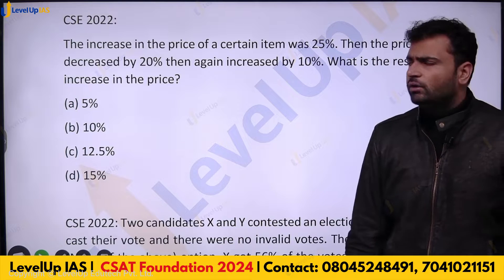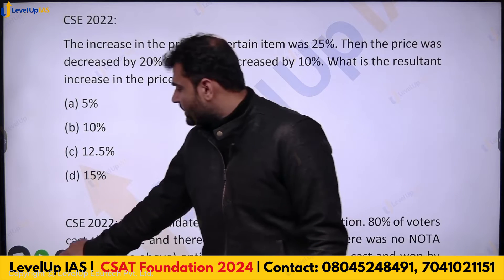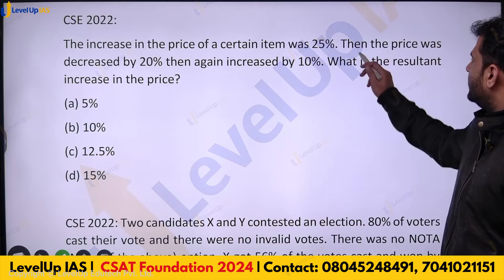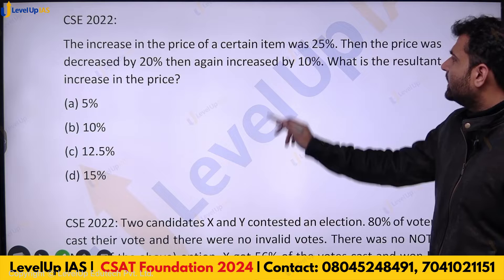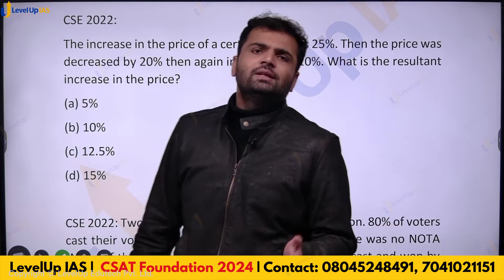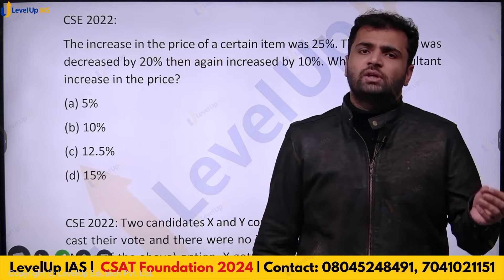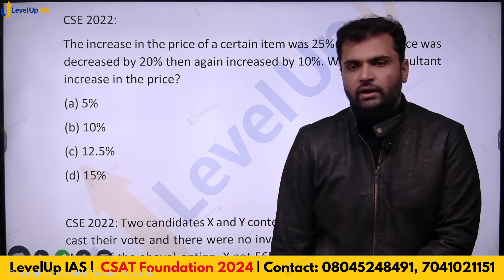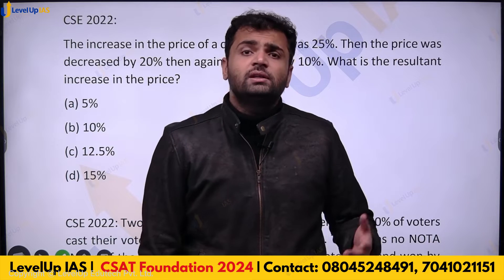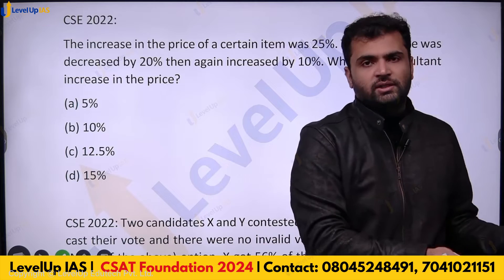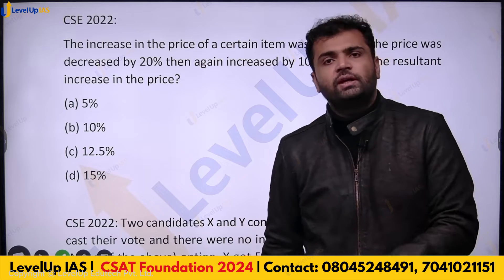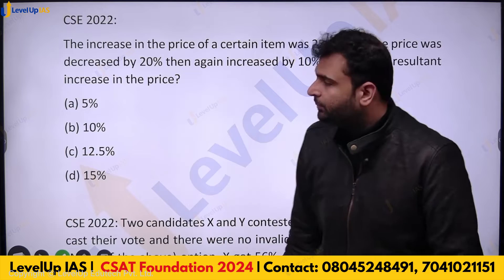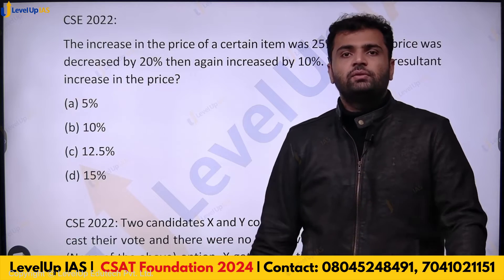The next question can fall under either profit and loss or percentages. The price of a certain item increases by 25%, then decreases by 20%, then increases again by 10%. We want the resultant change. The simplest approach is to assume the initial price is 100, since we are working in percentages — this simplifies calculations significantly.